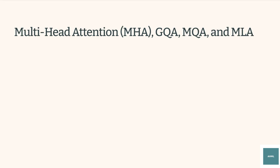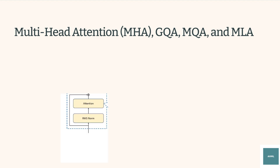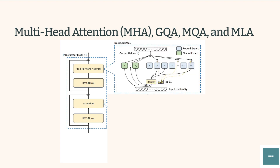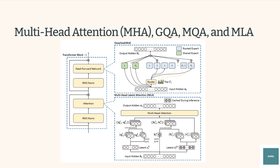DeepSeek V2 inherits the transformer architecture, where each layer consists of an attention module and a feedforward network. For the feedforward network, DeepSeek V2 adopts the DeepSeek MoE architecture. For attention, DeepSeek V2 introduces multi-head latent attention, or MLA, which utilizes low-rank key-value joint compression.